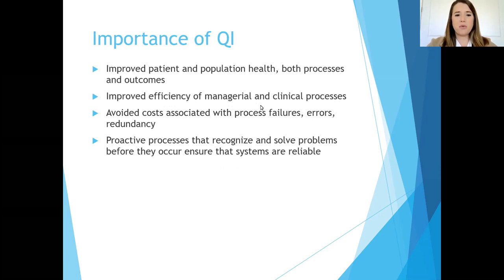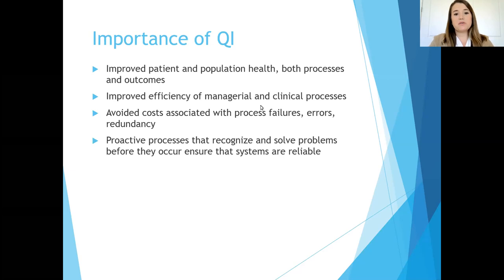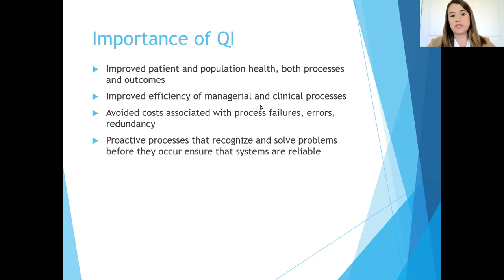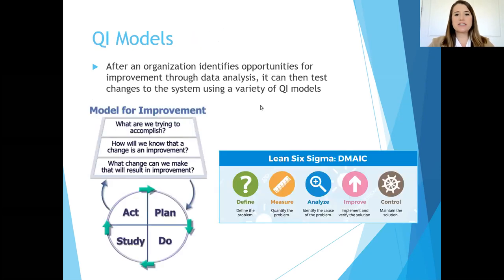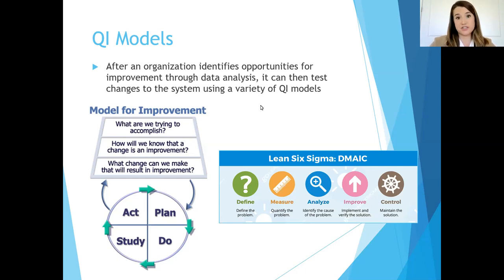When we talk about why we do QI work, improved patient and population health outcomes are probably the most obvious — both process and outcomes improvements, but also greater efficiency in administrative and clinical processes. We can avoid costs associated with process failures, errors, and redundant actions. Really, the goal is to develop proactive processes — recognizing problems and implementing solutions proactively instead of reactively so that we have reliable, robust systems. Let's touch on QI models that your organization might use to test changes to a system.